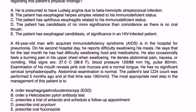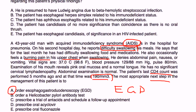A 43-year-old man with AIDS is in the hospital for pneumonia. On his second hospital day, he reports difficulty swallowing — for the last month he has had difficulty swallowing food and medications, and complains of burning pain in the upper chest when swallowing. He denies abdominal pain, nausea, or vomiting. Vitals are essentially normal. Examination of the mouth reveals pink oral mucosa and normal tongue, with no significant cervical lymphadenopathy. His last CD4 count five months ago was 190. The most appropriate next step: he has AIDS, a very low CD4 count, and difficulty swallowing, so it's probably a good idea to do an EGD to see if he has developed candida esophagitis.